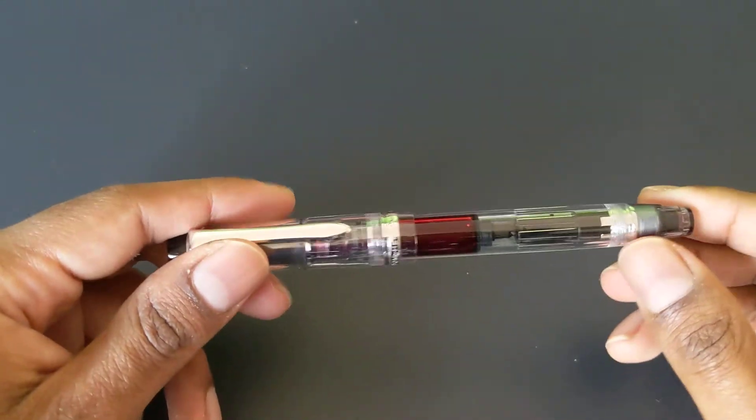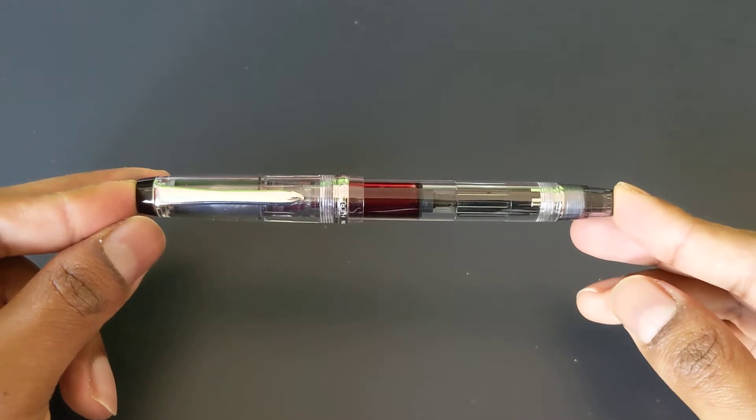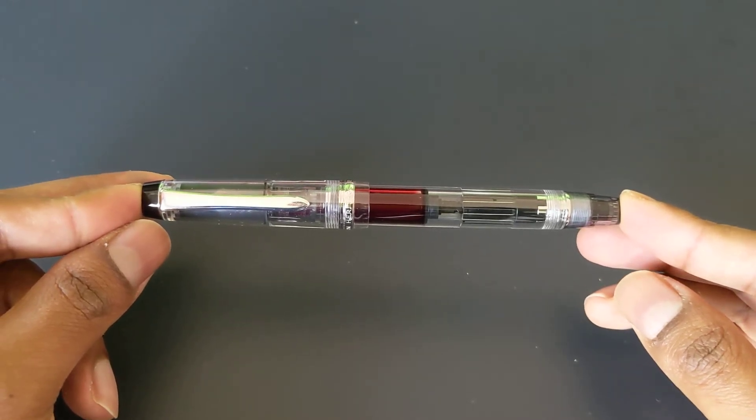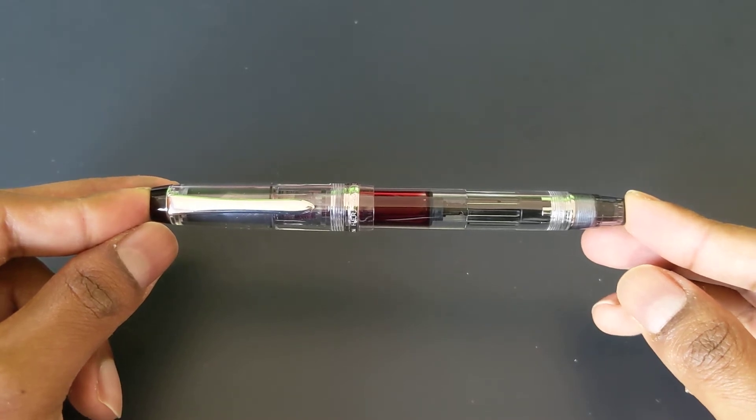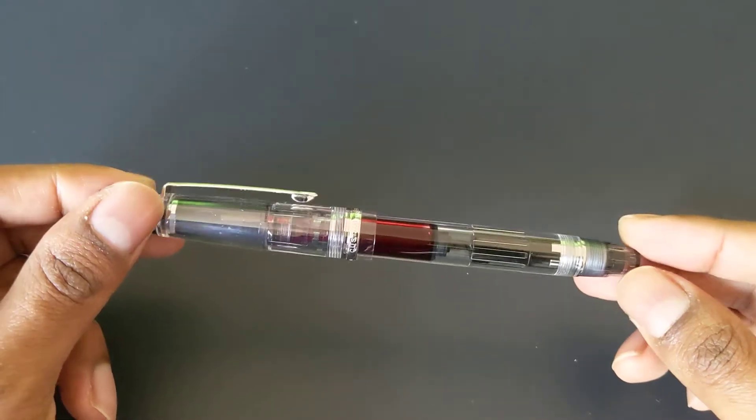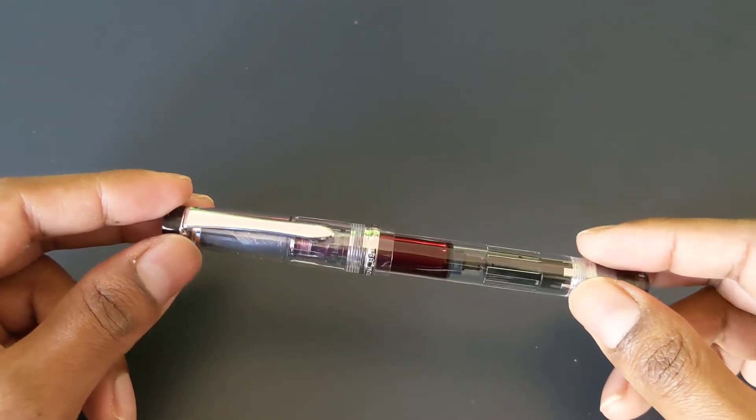Let me give you a couple measurements. The size of the pen capped is 136 millimeters. The grip diameter is 10.6 millimeters. The weight is 20 grams and the ink capacity is about 1.1 milliliters.